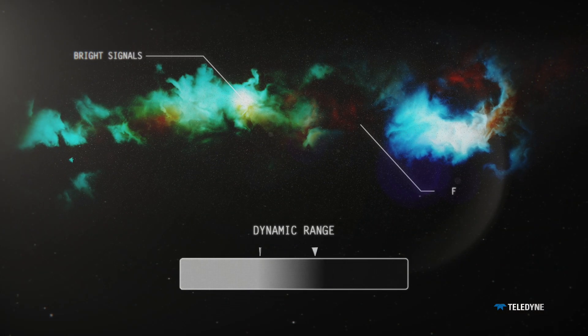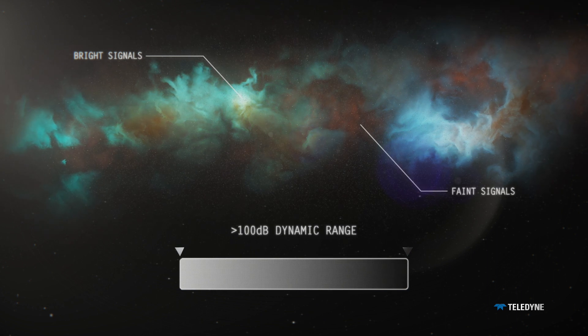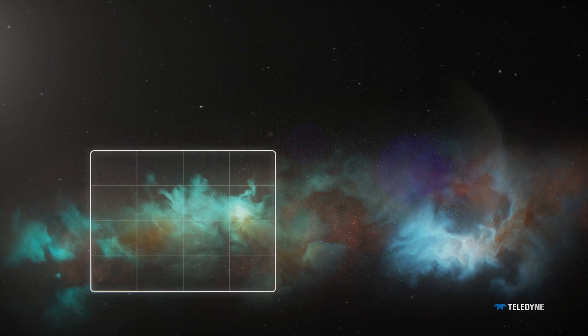Their unmatched dynamic range enables measuring both bright and faint signals within a single image. The redesigned pixel structure allows for back illumination for greater sensitivity.